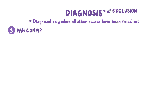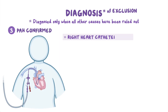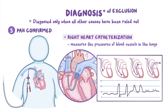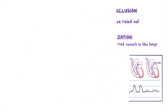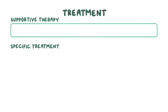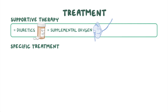Pulmonary arterial hypertension is confirmed through right heart catheterization to measure the pressures of the blood vessels in the lungs. Management of PAH is accomplished through supportive as well as specific therapies. Supportive therapy involves giving diuretics to control edema, supplemental oxygen if needed, and occasionally anticoagulants or blood thinners, like warfarin, to prevent blood clots from forming.